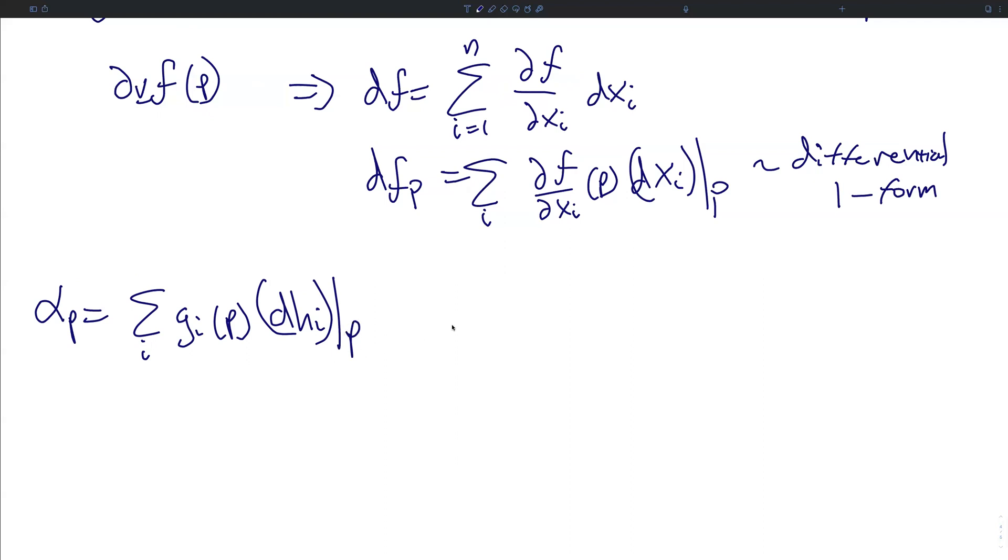And we can map this to coordinates as alpha is the sum of some set of functions F sub i times the differentials of the coordinates X_i. We want to map this back to our understanding of the differential forms we've been using in our derivations. So the question is, given alpha, is there some function F on U such that alpha equals dF?